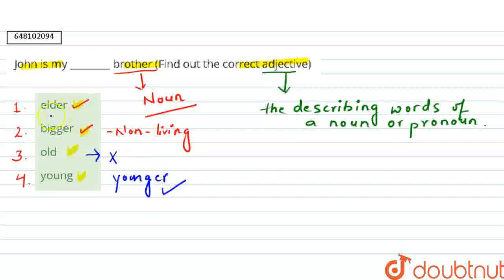So the most suitable option is elder. So write here elder. Now cross check it. John is my elder brother, ki John mera bada bhai hai.